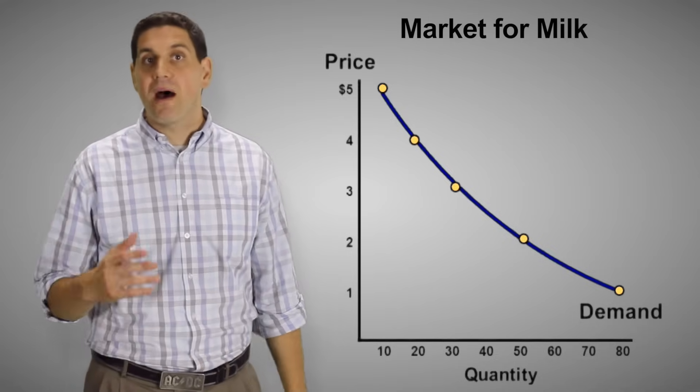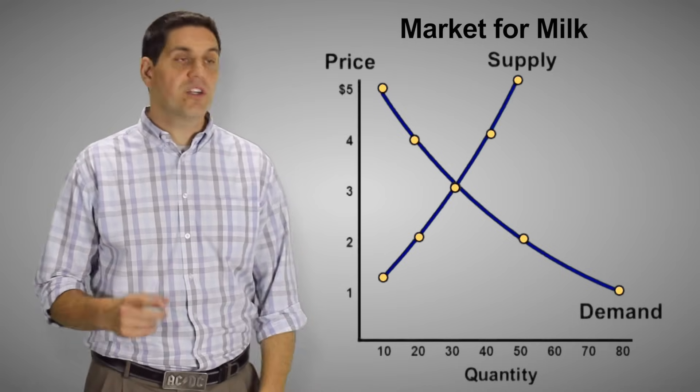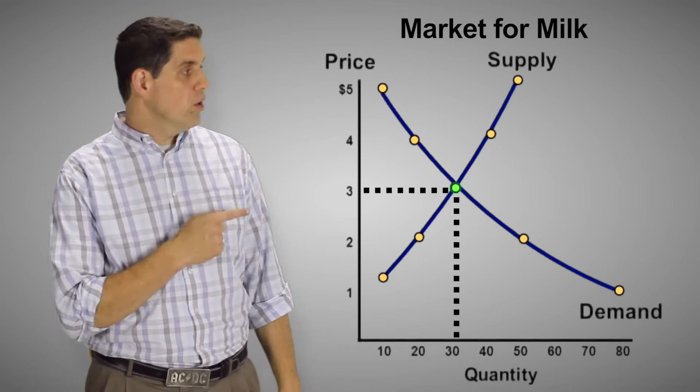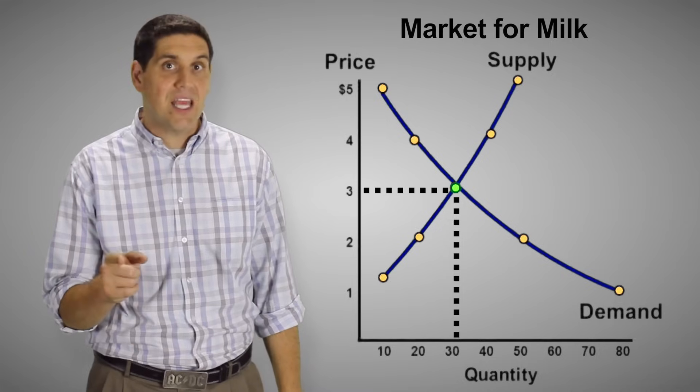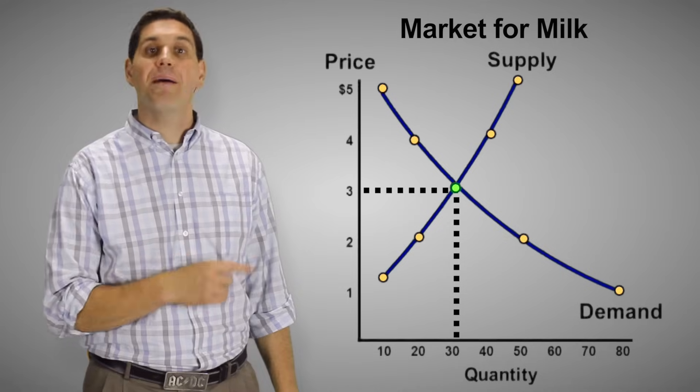In previous videos you learned about demand and why it's downward sloping. You also learned about supply and why it's upward sloping. And of course you understand the idea of equilibrium. That is the only place where the quantity demanded exactly equals the quantity supplied. You should also understand why when there's a change in price that moves along the curve.